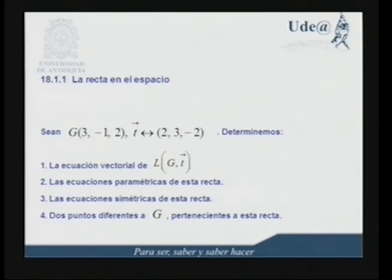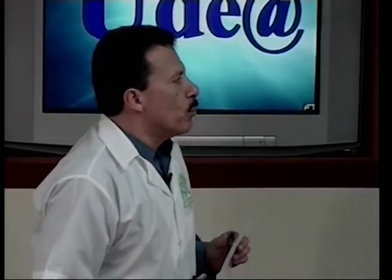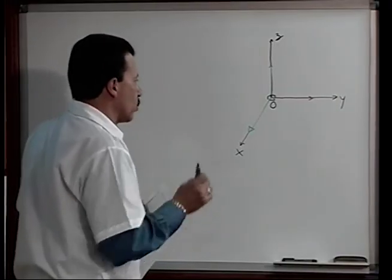Vamos a iniciar con el desarrollo del siguiente ejemplo. En la ilustración 2 tenemos el punto G de coordenadas (3, −1, 2) y el vector libre T en correspondencia con las coordenadas (2, 3, −2). Determinemos primero la ecuación vectorial de la recta L que pasa por el punto G y es paralela al vector T. Nos ubicamos en un sistema de coordenadas cartesianas rectangulares. Los vectores i, j, k orientados según los semiejes positivos de X, Y y Z son vectores ortonormales.